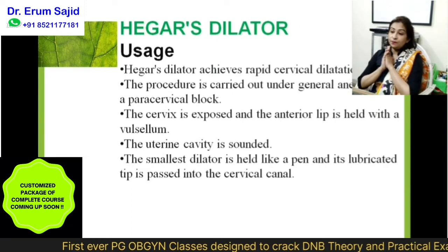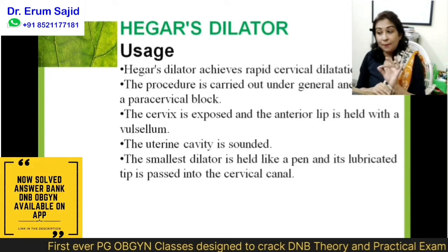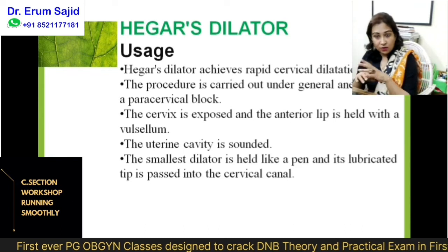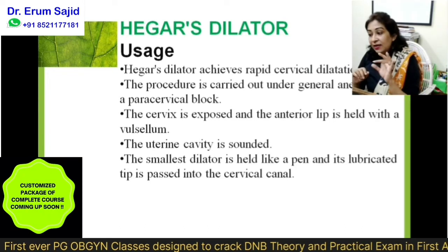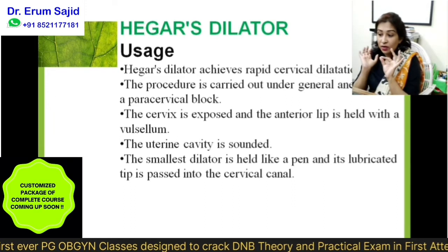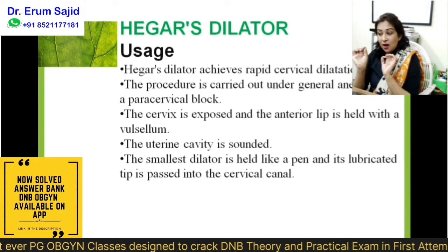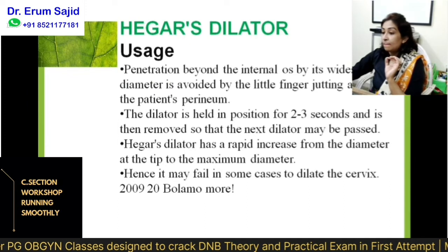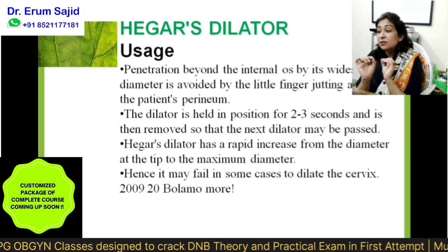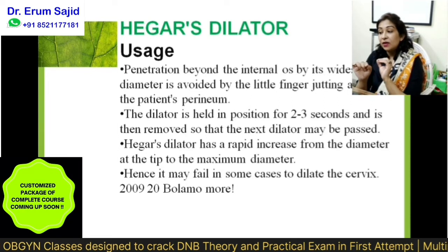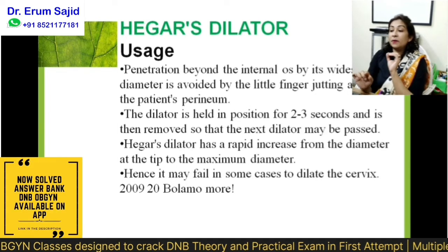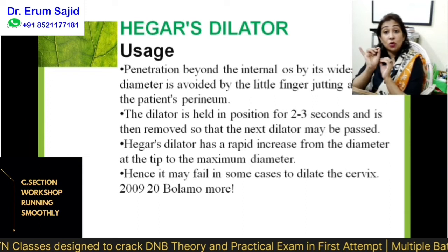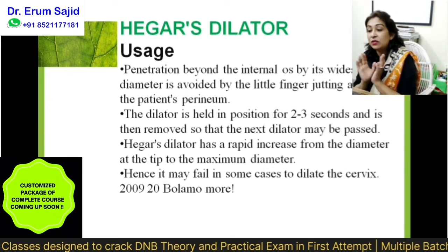Higar's dilator achieves rapid dilatation. The procedure is carried out under general anesthesia or a paracervical block — generally under general anesthesia. The cervix is first exposed, the anterior lip is held with the vulsellum, and the uterine cavity is first sounded. The smallest dilator is held like a pen, lubricated, and the tip is passed into the cervical canal. Penetration beyond the internal os by its widest diameter is avoided by the little finger resting against the patient's perineum, guarding against accidentally forcing it inside.